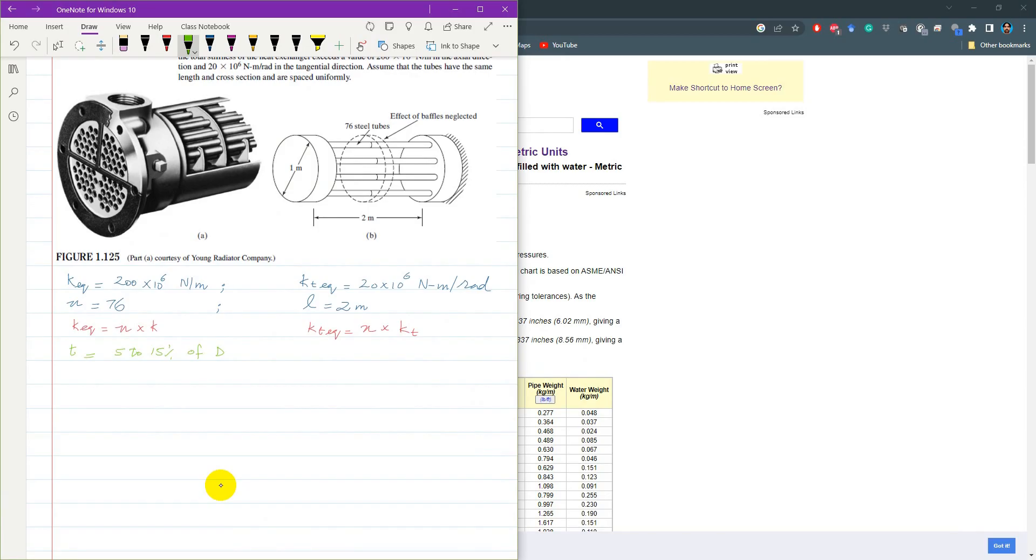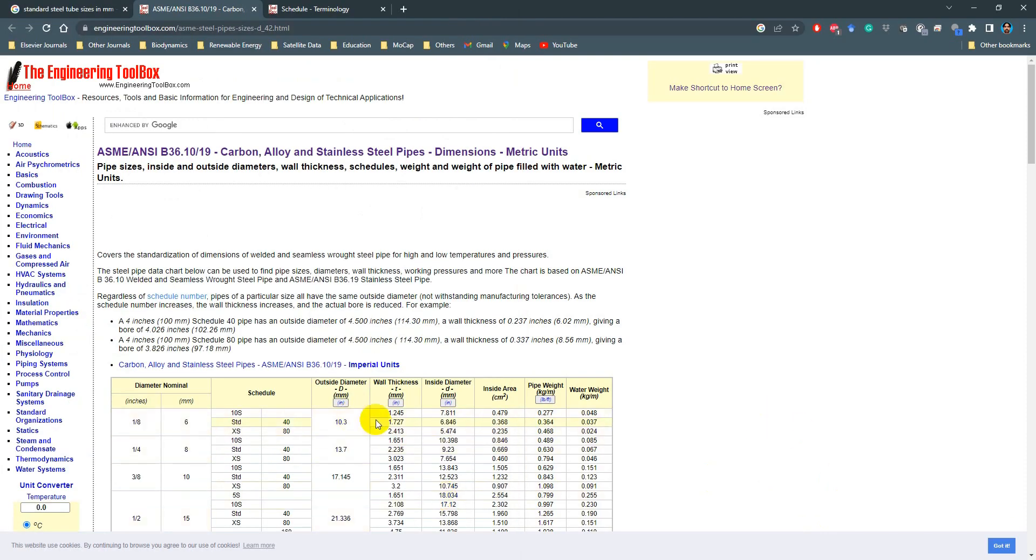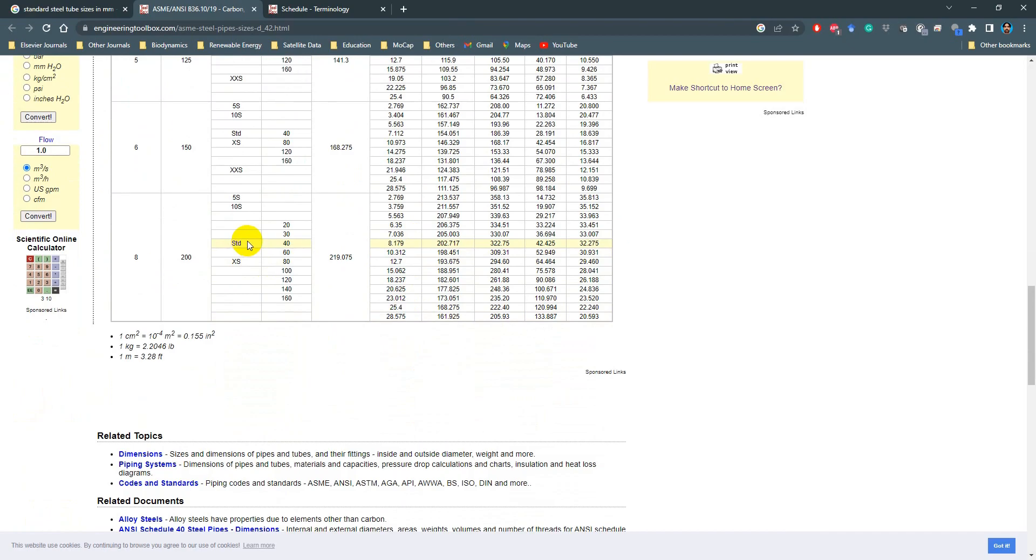Here I am assuming that thickness of the tube is 10% of outside diameter. So T is equal to 0.1 into D. When the thickness is 10% of the outside diameter, then I'll have inside diameter as 0.8 of outside diameter. Remember that this varies, but I am just using this as a guess.